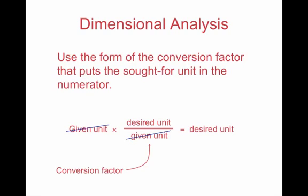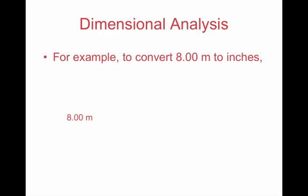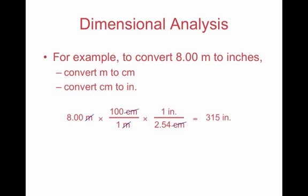Use the form of the conversion factor that puts the sought-for unit in the numerator. For example, if we're starting off with a given unit, we're going to put that given unit at the bottom of the next box or at the bottom of the next fraction. Remember, we're going to multiply all these. And the desired unit is going to go on top. For example, in order to convert 8 meters to inches, we must first begin by converting meters to centimeters.